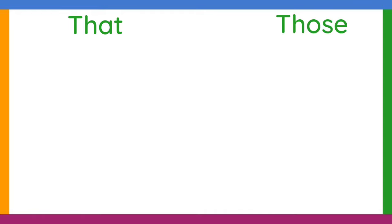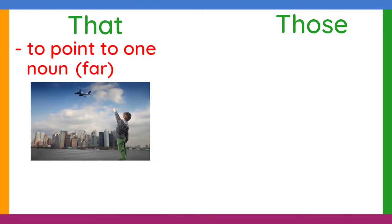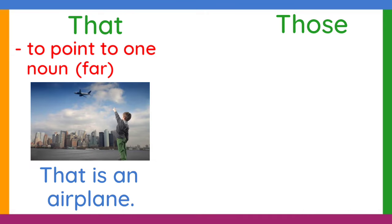Now let us have that and those. That is used if someone is pointing to one person or thing that is far from him or her. For example, that is an airplane. As you can see, the airplane that the person is pointing to is far from him. That is why that is used.